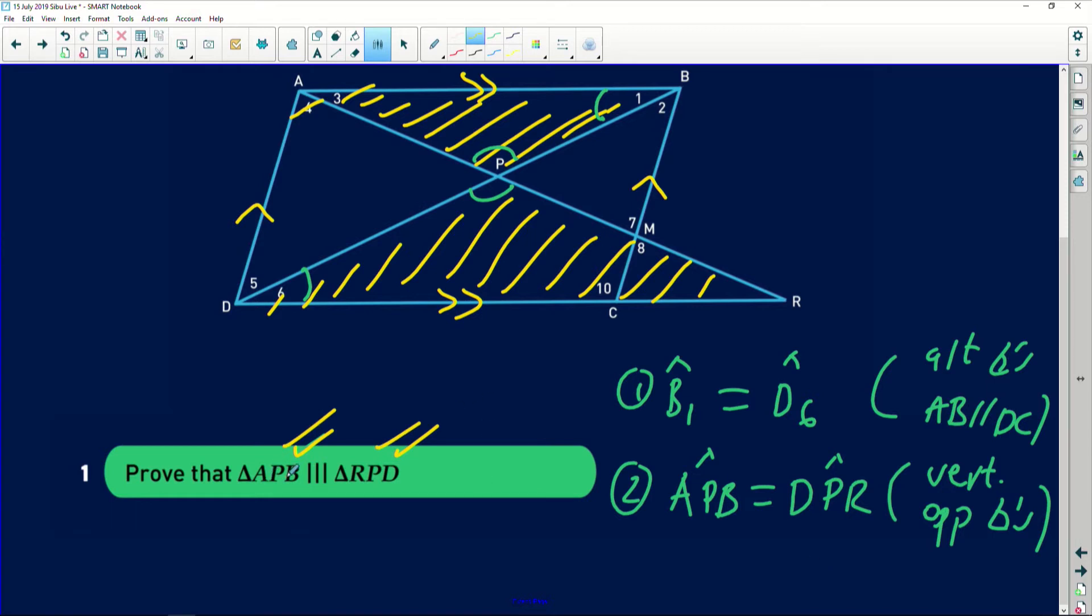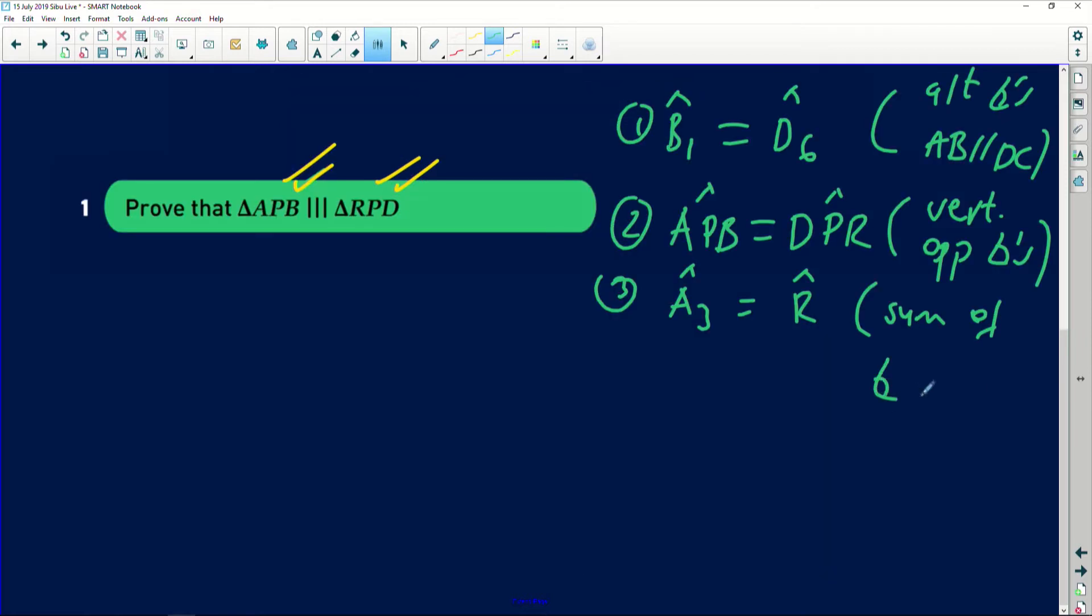Then if I have proven that the B value is equal to the D, I have proven that angle P equals to angle P. Now I can claim that angle A3 is also equal to R. Then I can see that angle A3 is simply equal to angle R, and this is because of sum of angles of a triangle. You can even use alternate angles, sum of angles of a triangle. Therefore, triangle APB is similar to triangle RPD, and this is because of angle, angle, angle.